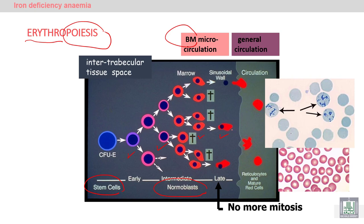Immature red blood cells are called normoblasts. The late normoblast exits the bone marrow into circulation, passing through a transient stage called the reticulocyte. Reticulocytes are immature red blood cells containing remnants of RNA, seen as a polychromatic discoloration inside the cell. The normal percentage of reticulocytes in peripheral blood is 0.5 to 2.5%. Reticulocytes then mature into mature red blood cells, which are anucleated — no nucleus — but have a central pallor representing one third of the cell.